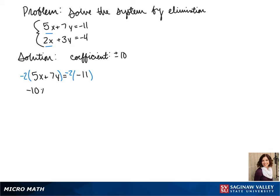When we do that, we get negative 10x minus 14y equals 22. For our second equation, we multiply by 5. This gives us 10x plus 15y equals negative 20.